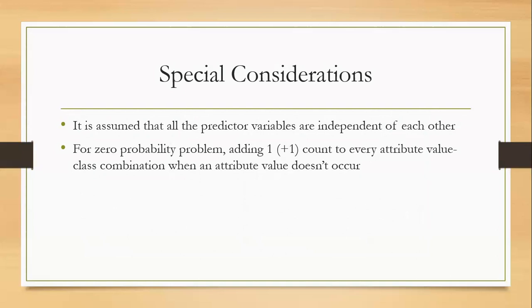Connected to the cons. It is assumed that all the predictors are independent of each other. And for zero probability problems, there is a solution. Add one count to every attribute value class combination when an attribute doesn't occur. This way we won't be dividing the probability value by zero because we have one instance there.